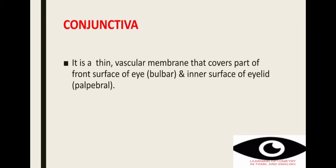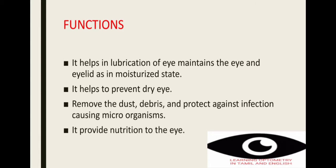Next is the conjunctiva. Conjunctiva is a vascular membrane, meaning it has blood vessels. It is of two types: bulbar and palpebral. Bulbar conjunctiva covers the front surface of the eye, and palpebral conjunctiva covers the inner surface of the eyelid. Functions of conjunctiva: it helps maintain the eye in a moisturized state, prevents dry eye, removes dust and debris, and protects the eye against microorganisms.